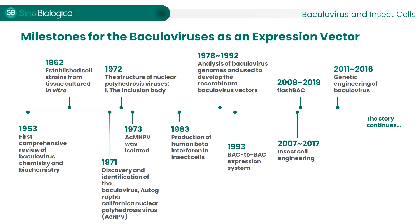Since then, many researchers have contributed towards improving the performance of this system. A major improvement was the generation of an AcMNPV bacmid. The bacmid can be applied and modified in E. coli, which makes it much easier to use. With more research, various expression systems were established, such as flashBAC, bigBAC, and smartBAC. All of them are commercial systems. You can find them online. BEVS has become a universal platform to express recombinant proteins, which finds use in drug discovery, structural analysis, vaccine development, and other applications.